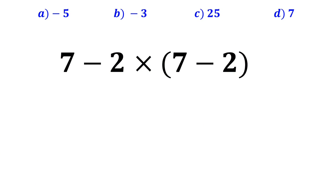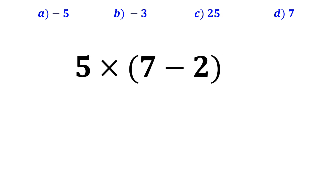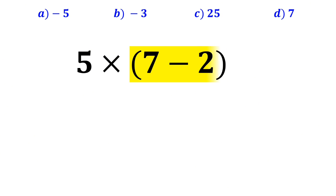In the first step, most people subtract 7 minus 2 that I've highlighted in yellow. So it becomes 5 times open parenthesis 7 minus 2 close parenthesis. In the next step, they calculate 7 minus 2 inside the parenthesis, which becomes 5 times 5.